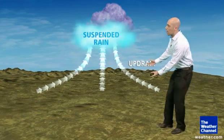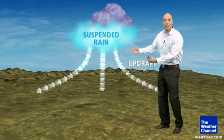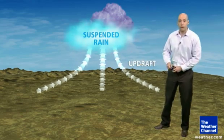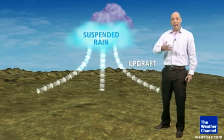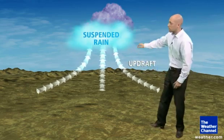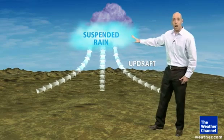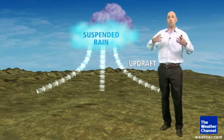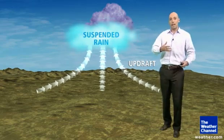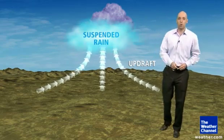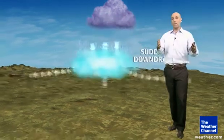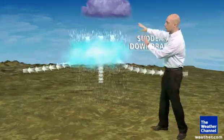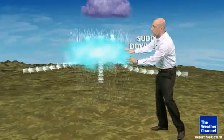It needs a pretty decent-sized updraft — that is air that's moving up from the ground and into the cloud. It has to be strong enough to suspend some of the rain up aloft where it starts to evaporate and cool down. Once it cools down enough, it gets heavier than the air around it, so it very rapidly falls.